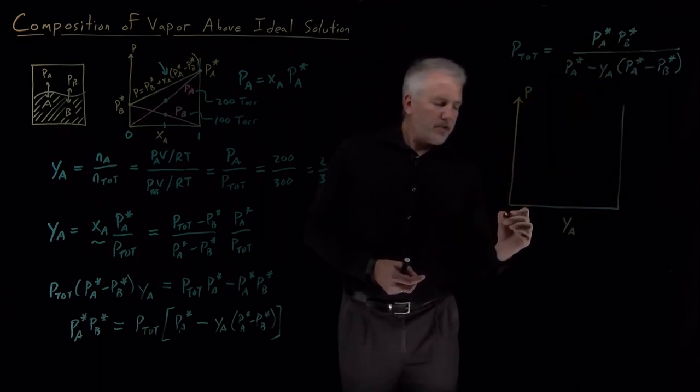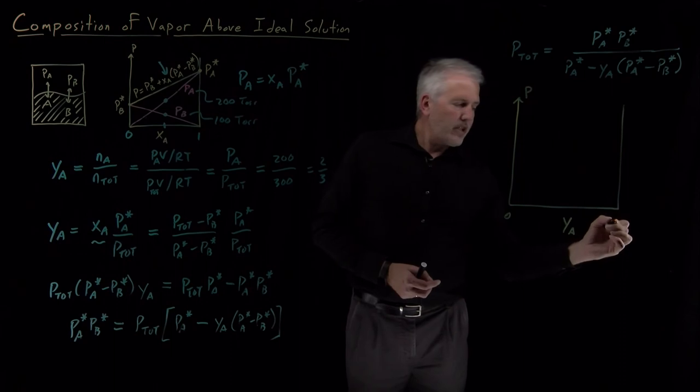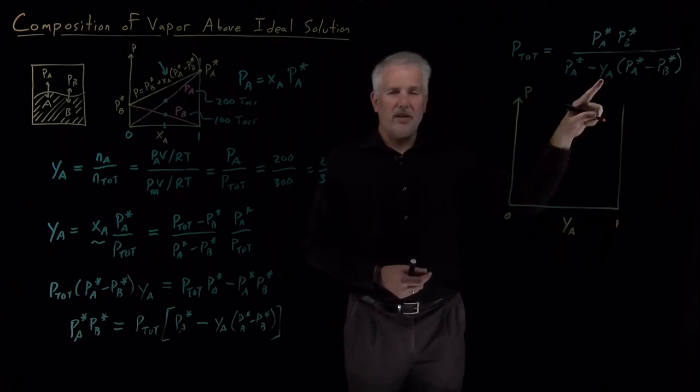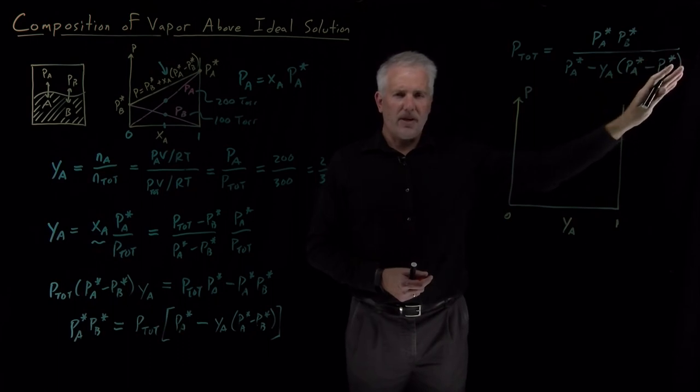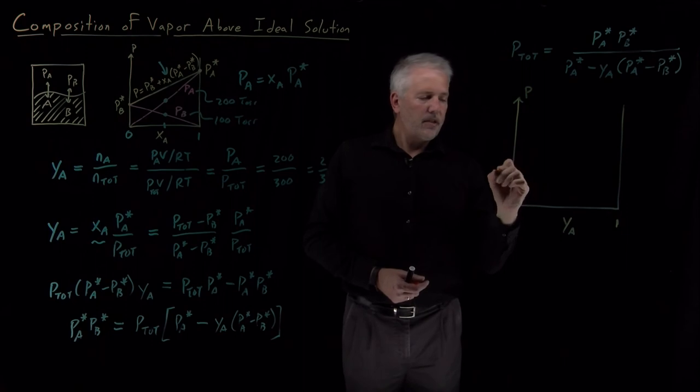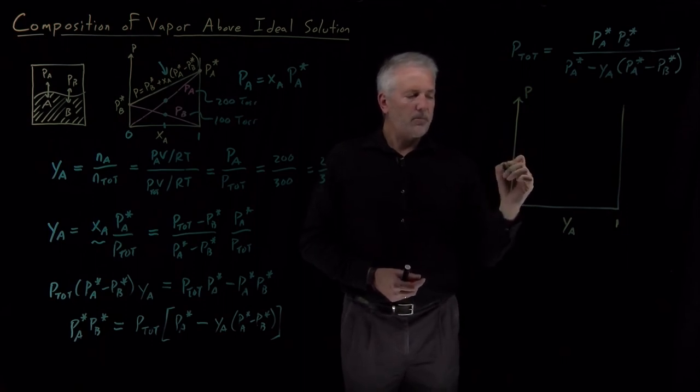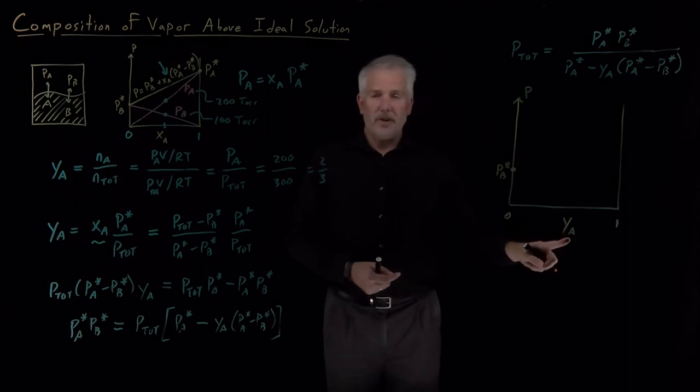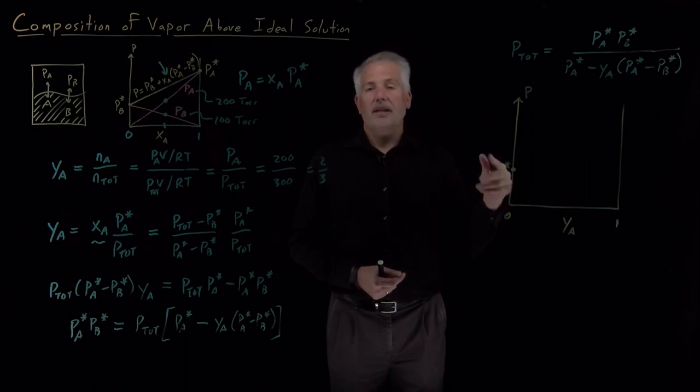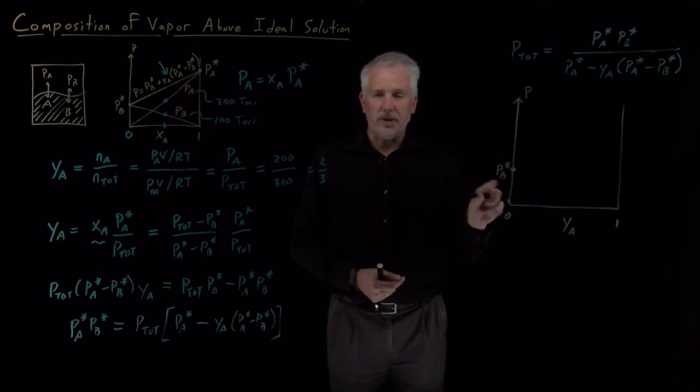We can find the two limiting cases relatively easily. When the mole fraction is zero, if I put a zero in here, the whole second half of this denominator disappears, the PA stars cancel, then I'm going to have, just as before, and unsurprisingly, when I have mole fraction zero, if the vapor above the solution is purely B, then the solution must also be pure B and the partial pressure is equal to the vapor pressure.